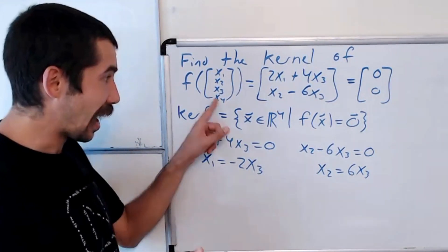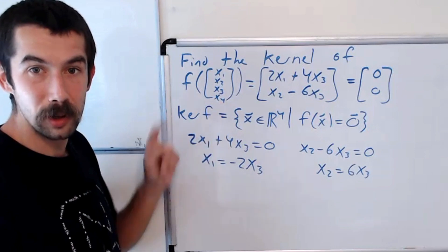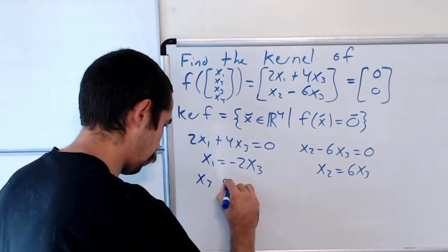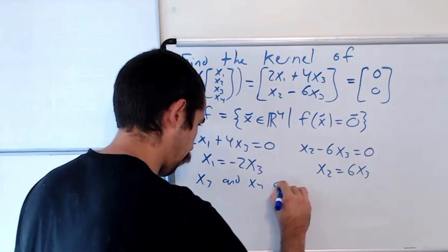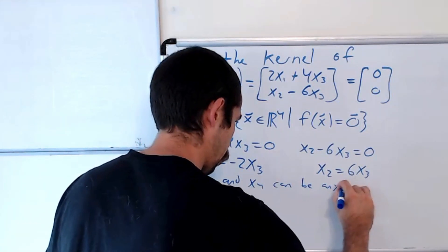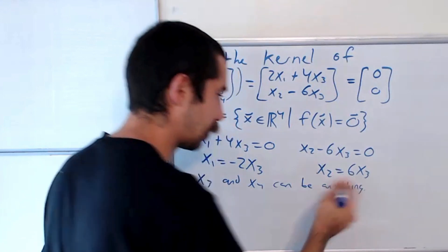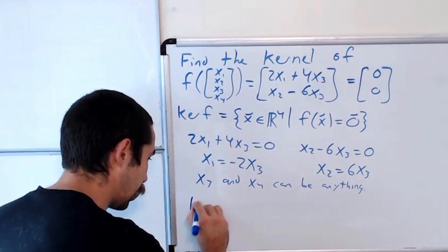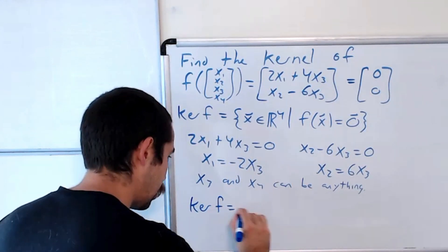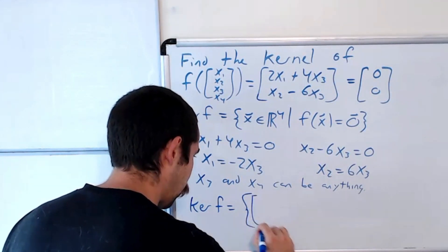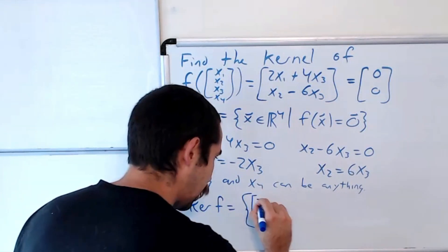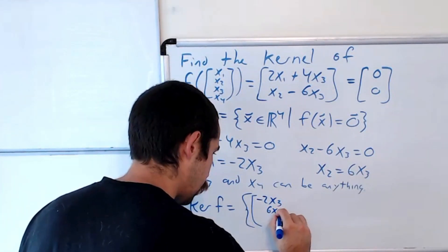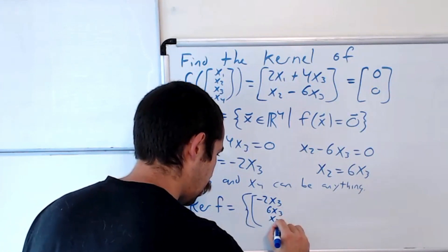So x3 and x4 would be free variables. So x3 and x4 could be anything. Putting it all together, the kernel of this function is equal to the set of vectors of the form negative 2x3, 6x3, x3, and x4.